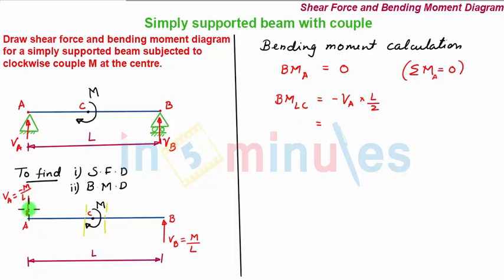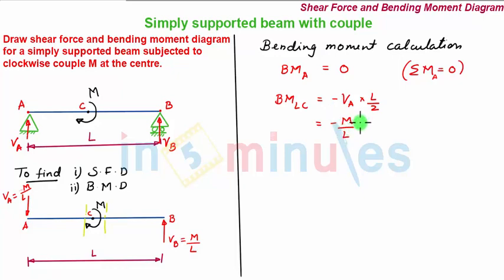Now, VA is negative and acting downward. Removing the negative sign — since it simply denotes that the vertical reaction VA is downward — we have minus M/L into L/2, which equals minus M/2.